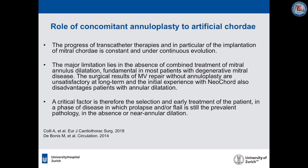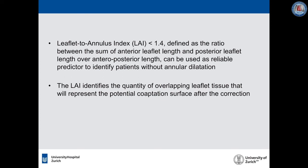The progress of transcatheter therapies and in particular mitral cord implantation is constant and under continuous evolution. The major limitation lies in the absence of combined treatment of mitral annulus dilatation, which is fundamental in most patients with degenerative mitral disease. Surgical results of mitral valve repair without annuloplasty are unsatisfactory long-term, and initial experience with NeoChord also disadvantages patients with annular dilatation. A critical factor is therefore early treatment of patients in a phase where prolapse or flail is the prevalent pathology in the absence of or near annular dilatation. The leaflet-to-annulus index (LAI) less than 1.4 — defined as the ratio of the sum of anterior and posterior leaflet length over the anterior-posterior length — can be used as a reliable predictor to identify patients without annular dilatation.